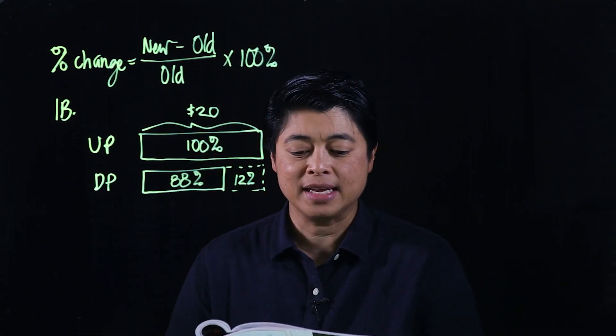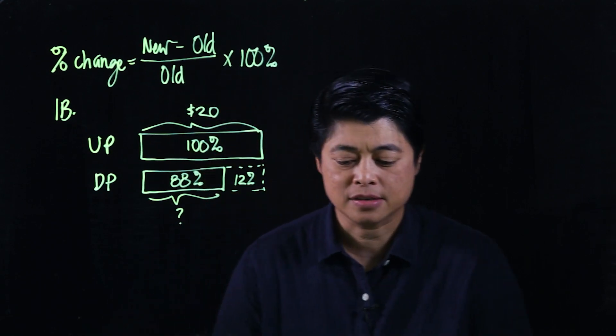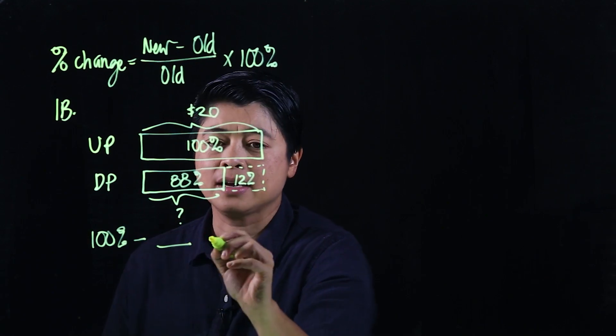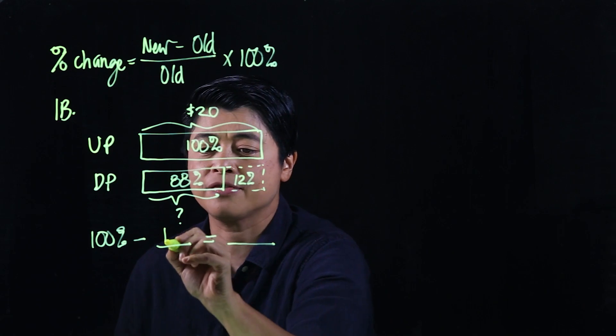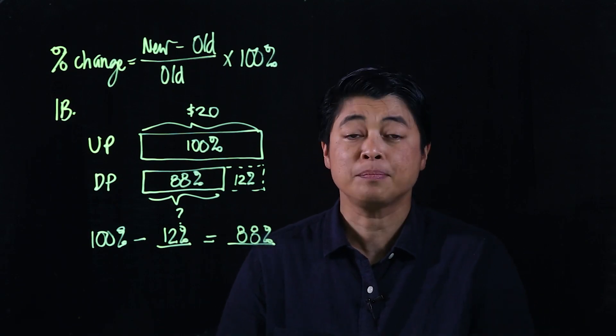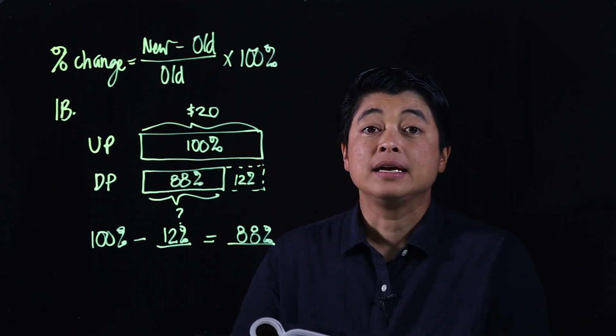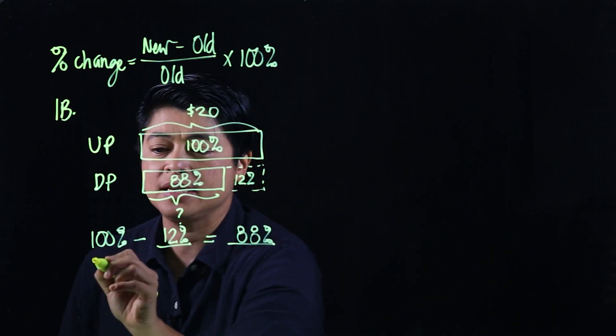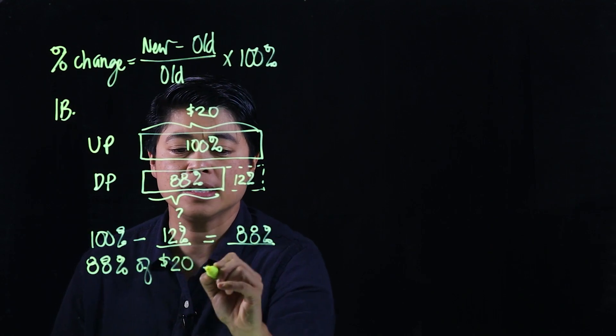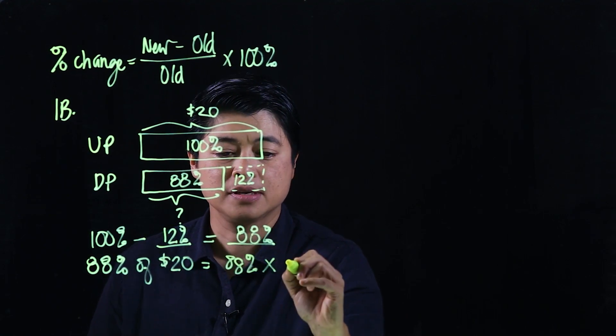The question is, what is the discounted price? So the discounted price must be that. Okay, so the book does it as 100 percent minus blank equals blank. So the blank first is the 12 percent, which means this is 88 percent. Okay, then the book says the discounted price is 88 percent of the usual price. Makes sense.